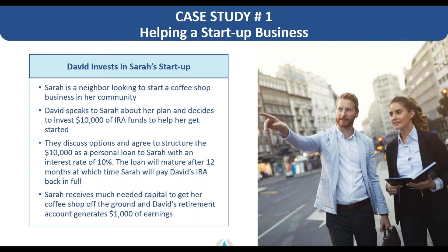They discuss a few different ways they can structure this investment — ownership in the coffee shop or in this case a small personal loan to Sarah, which can be secured or unsecured. They go with an unsecured loan, so nothing needs to be recorded with the county. A promissory note is drawn up between David and Sarah, executed by Sarah as the borrower and sent to Advanta as the retirement account custodian for safekeeping until the loan is paid off. The ten thousand dollar loan is held at a ten percent interest rate with a maturity date of 12 months, at which time Sarah will pay back David's retirement account in full.